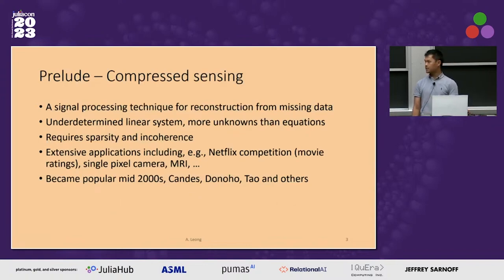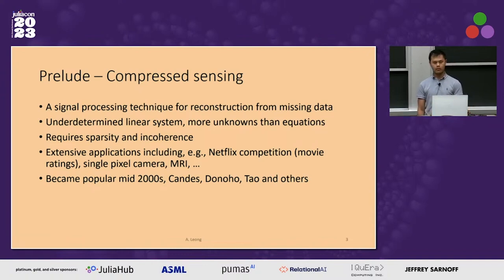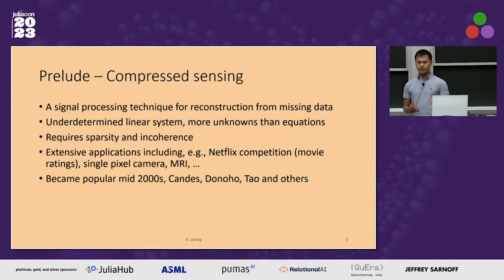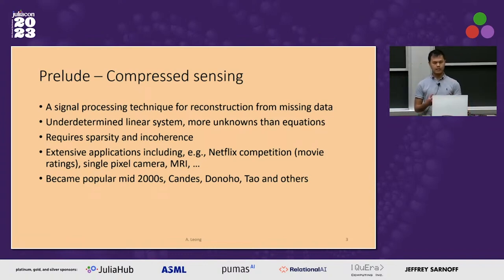So, compressed sensing — what is it? It's a signal processing technique for reconstruction from missing data. If you have a matrix, we're interested in under-determined linear systems, where we have more unknowns than equations.